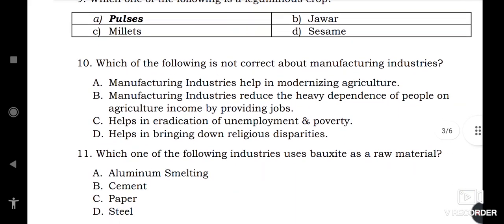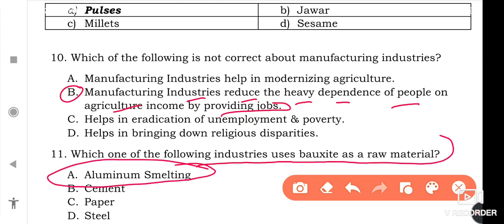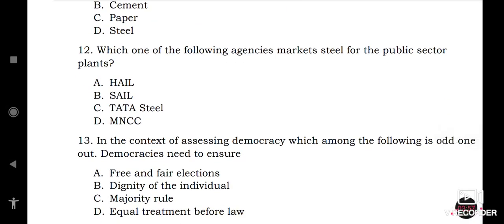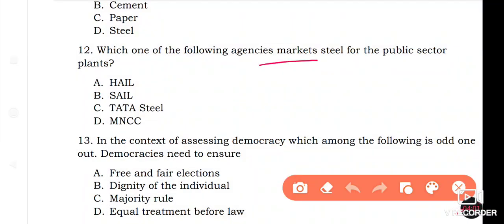Which of the following is not correct about manufacturing industries? It is the second one: Manufacturing industries reduce the heavy dependence of people on agriculture income by providing jobs. Which of the following industries uses bauxite as a raw material? It is Aluminium Smelting. Which one of the following agencies markets steel for the public sector plants? It is SAIL.